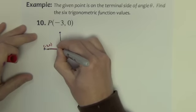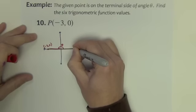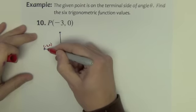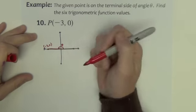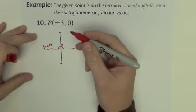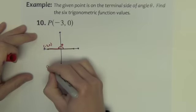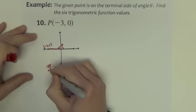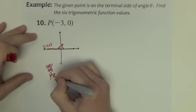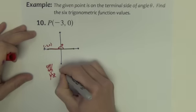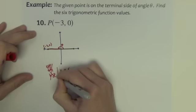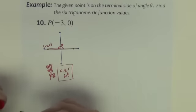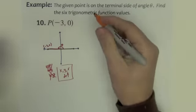So I want that angle theta. I can't really draw up or down to the x-axis to make a triangle here. If I can't construct a triangle, I cannot use the opposite adjacent hypotenuse definitions. I'm going to have to use the x, y, r definitions for this problem.